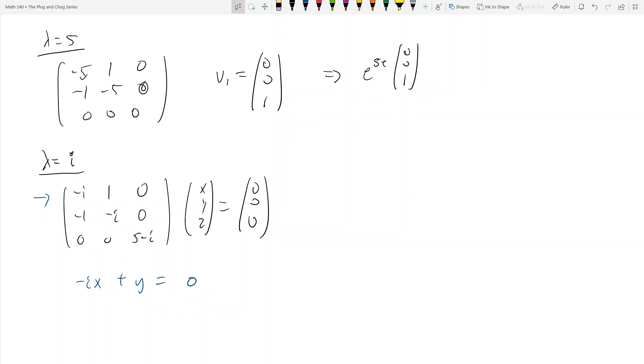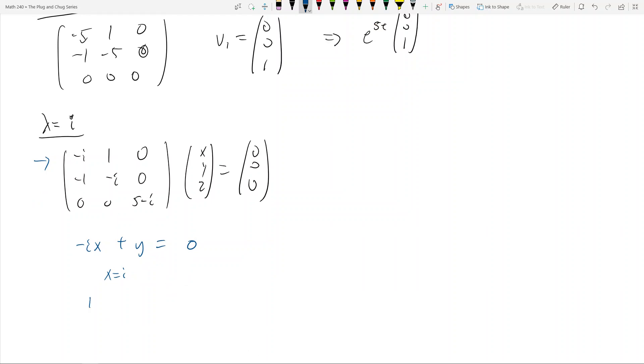And so let's say x is equal to positive i, which is the complex conjugate of negative i, right? And then that means I would get 1 plus y is equal to 0. So then that forces y to equal negative 1, okay?